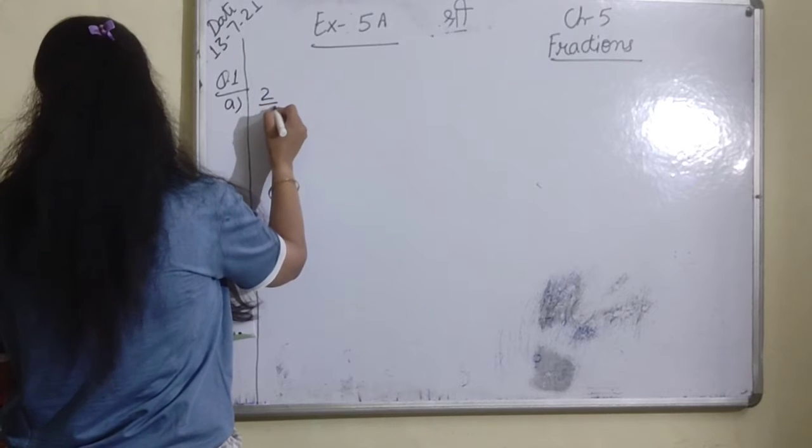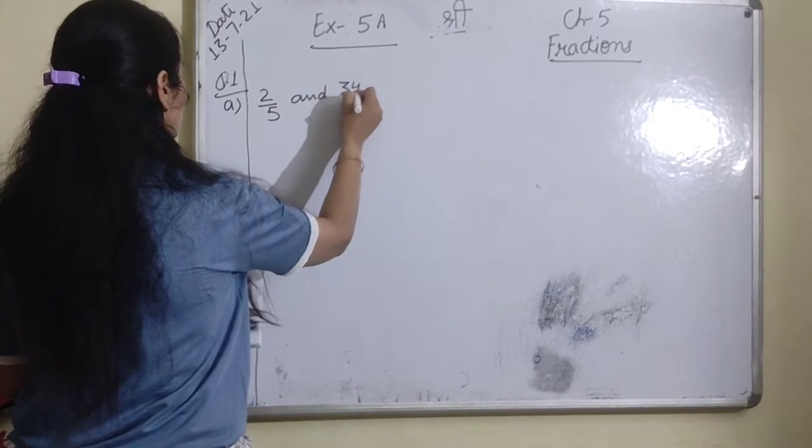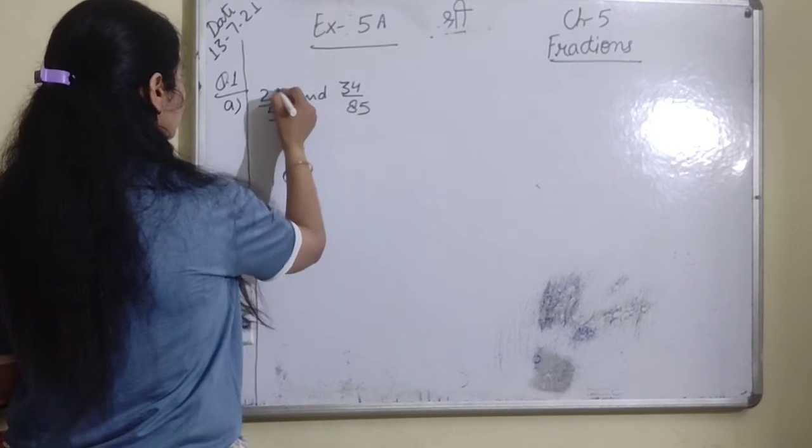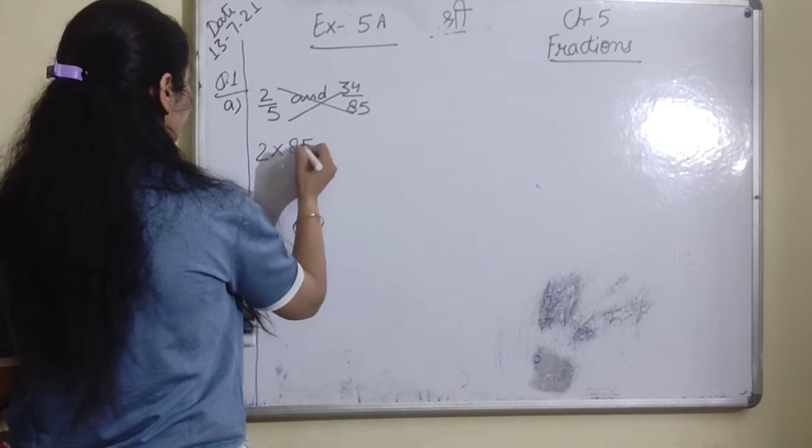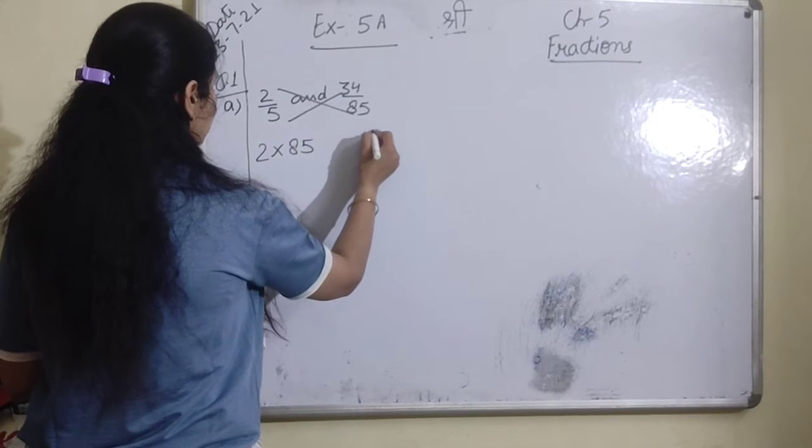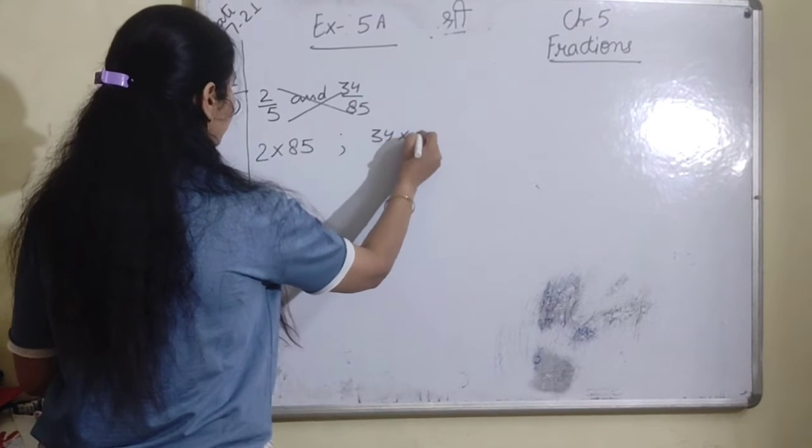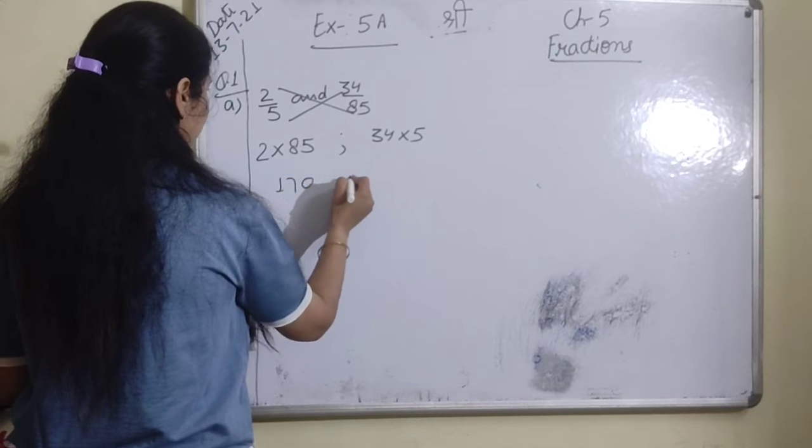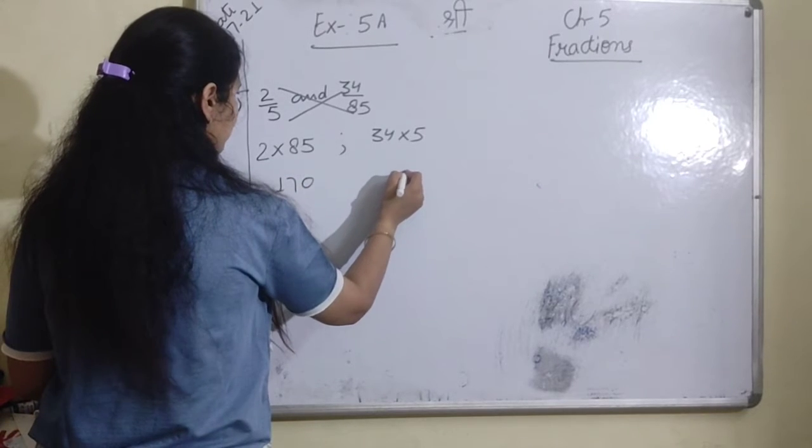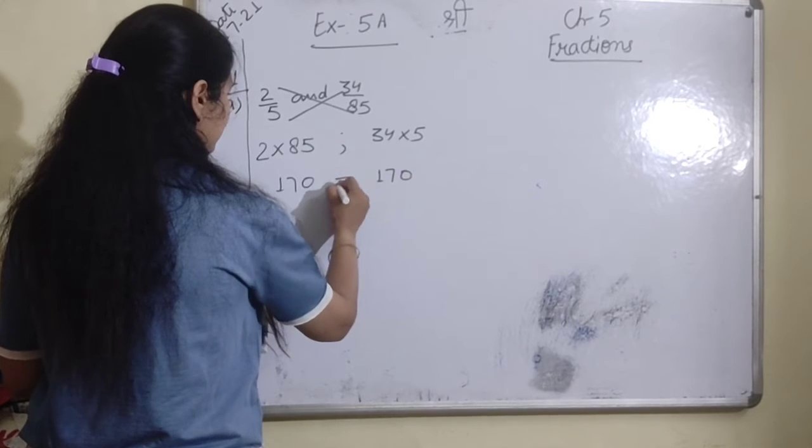2 upon 5 and 34 upon 85. So cross multiplication: 2 multiplied by 85 or 34 multiplied by 5. 2 into 85 is 170, which equals 170. Yes, equivalent.